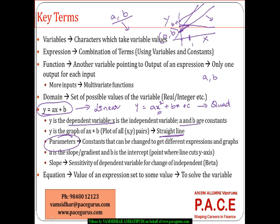So here when I use it as a parameter, when the data is changing, when the graph needs to be changed, a and b can get changed. A is called as the slope or the gradient, and b is called as the intercept. We have already talked about it - intercept is a point where the line cuts the y axis, and slope is the sensitivity of how the y is changing when x is changing.